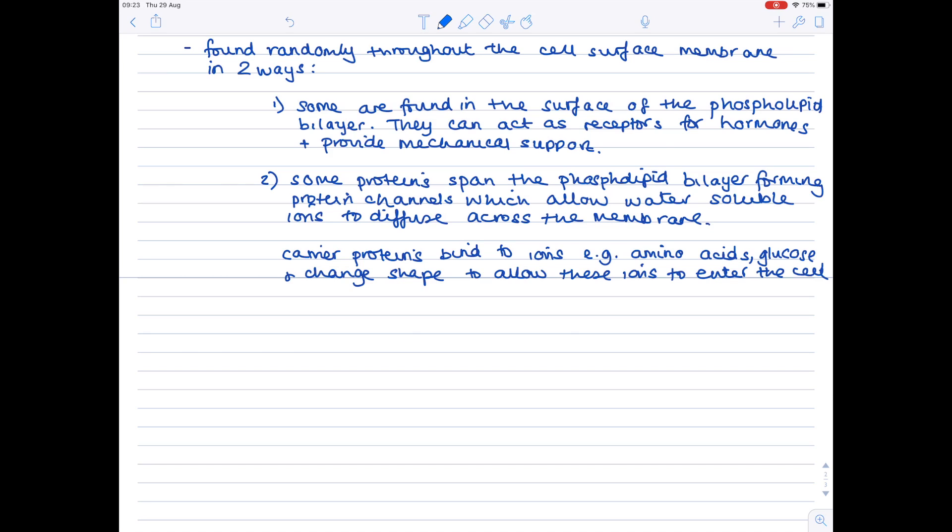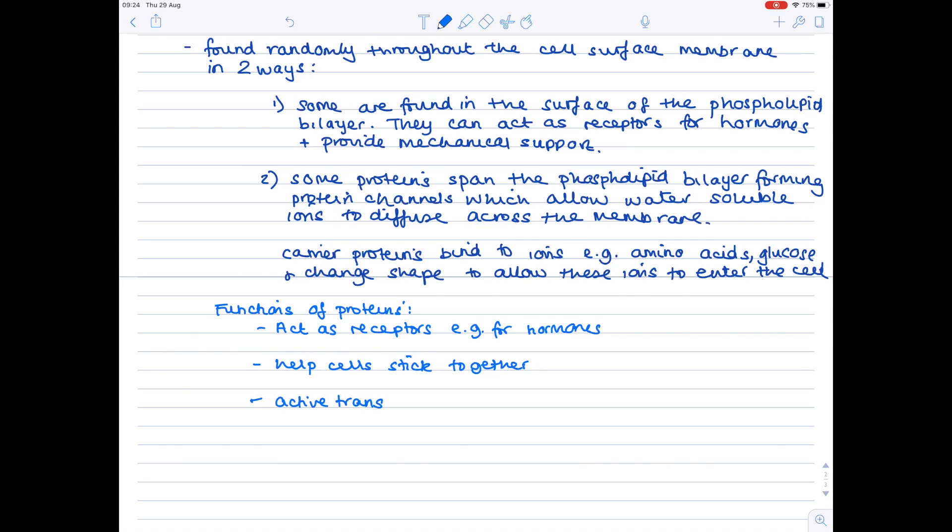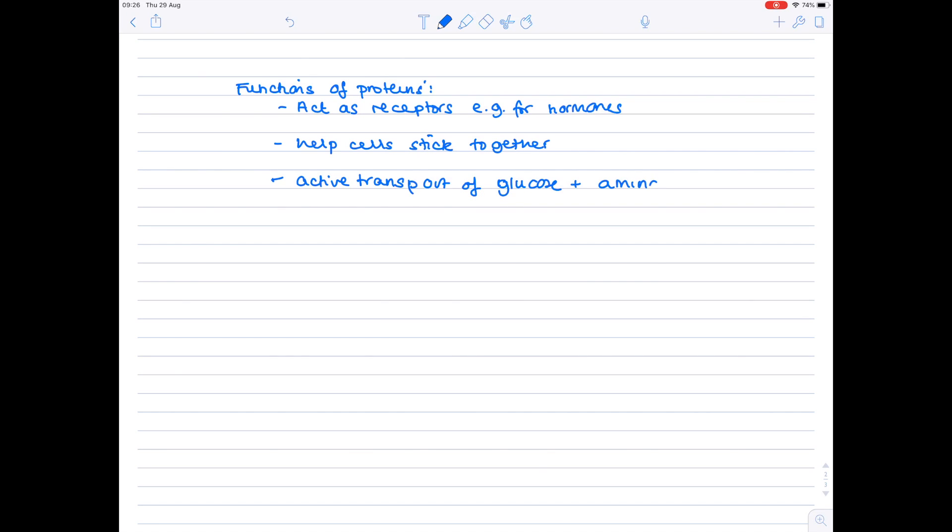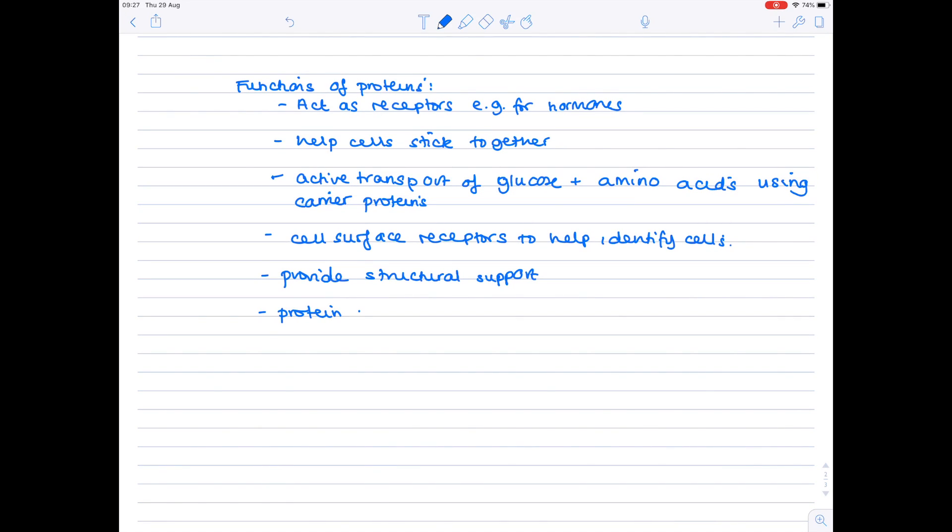We're now going to write a fairly tedious list where we summarize the sorts of functions of the proteins. The first one is that they can act as receptors, for example for hormones. One that we haven't mentioned yet is that they can help cells stick together. They can allow the active transport of glucose and amino acids using carrier proteins. They can act as cell surface receptors to help identify cells. They can obviously provide structural support. Remember, we said that there are protein channels which help move water-soluble substances.